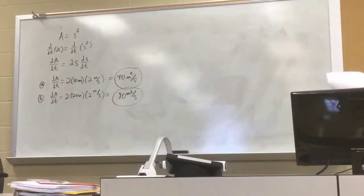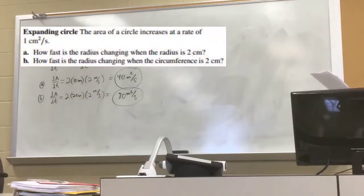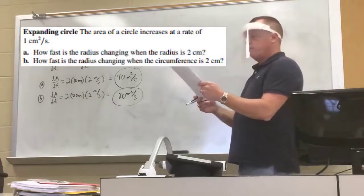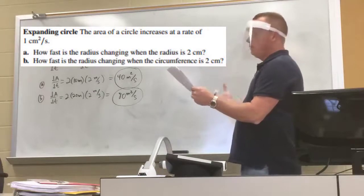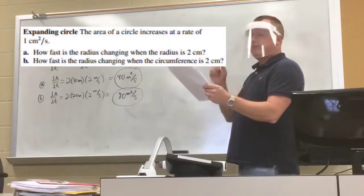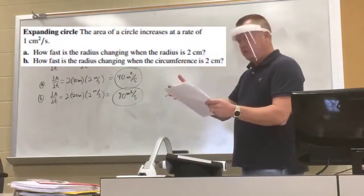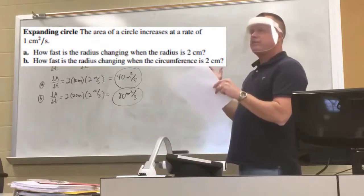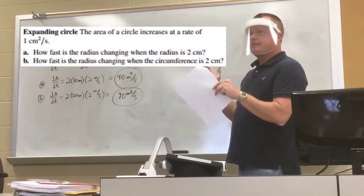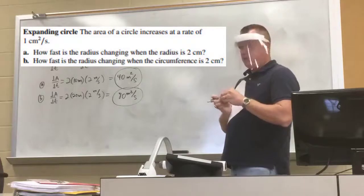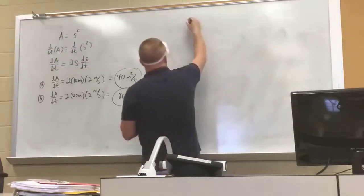The next problem: the area of a circle increases at a rate of 1 centimeter squared per second. Part A: how fast is the radius changing when the radius is 2 centimeters? Part B: how fast is the radius changing when the circumference is 2 centimeters? Our main formula is the area of a circle: A = πr².